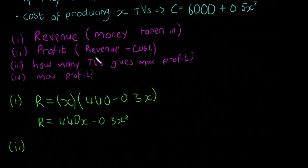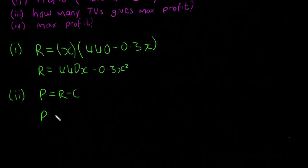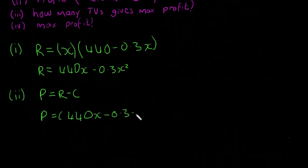Number two then, the profit. So the profit is going to be the revenue minus the cost. So the revenue, so I'm going to say P is equal to, oh, no, that's an R. Let me get rid of this. P is equal to R minus C, so we already have R here, and we have C up here.